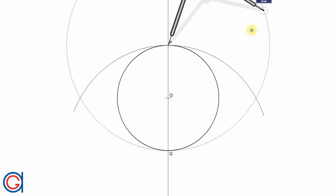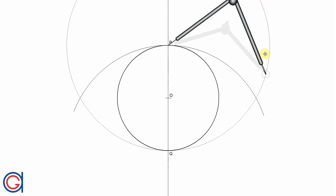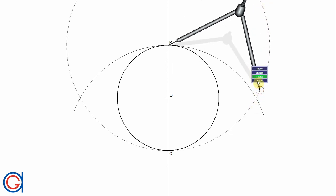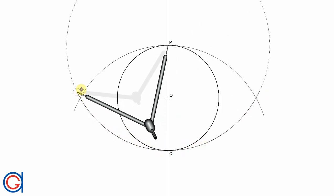And now with the same radius and setting the compass on P we are going to scribe another semicircle cutting the previous semicircle at two points which we will call R and S.